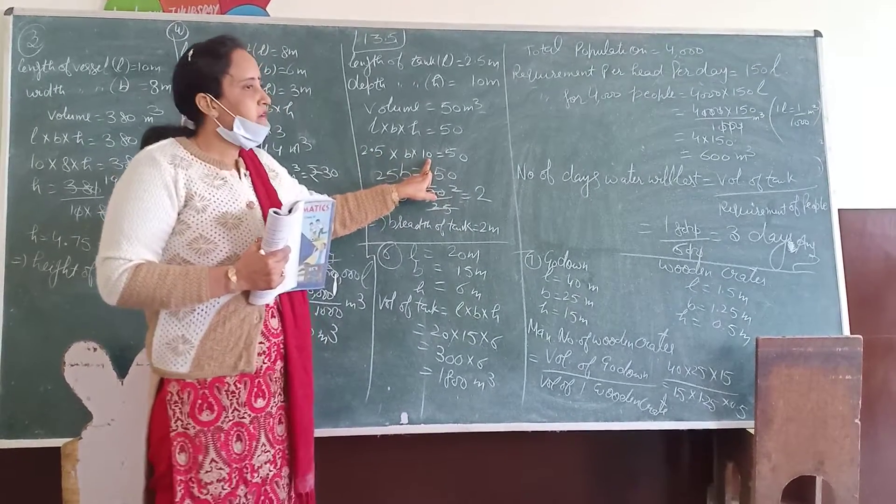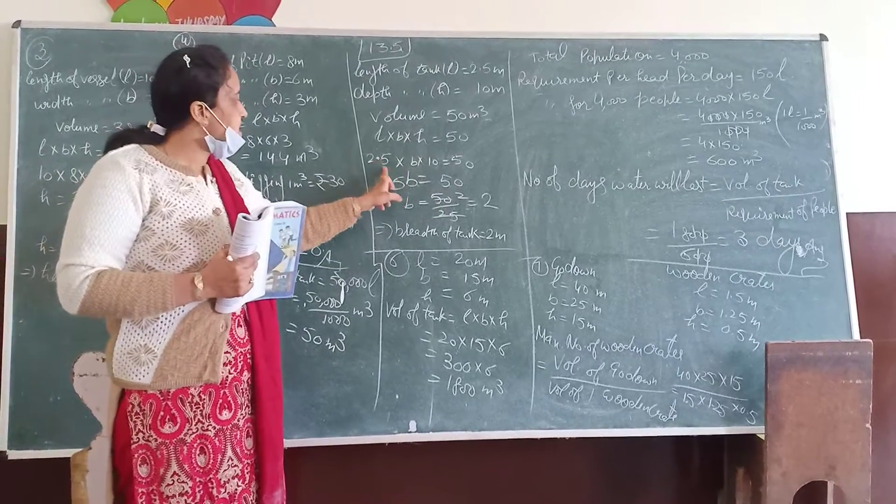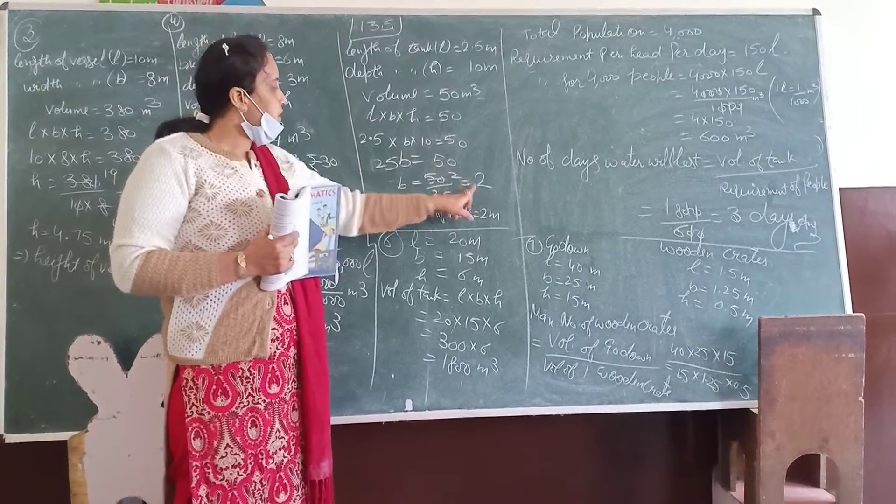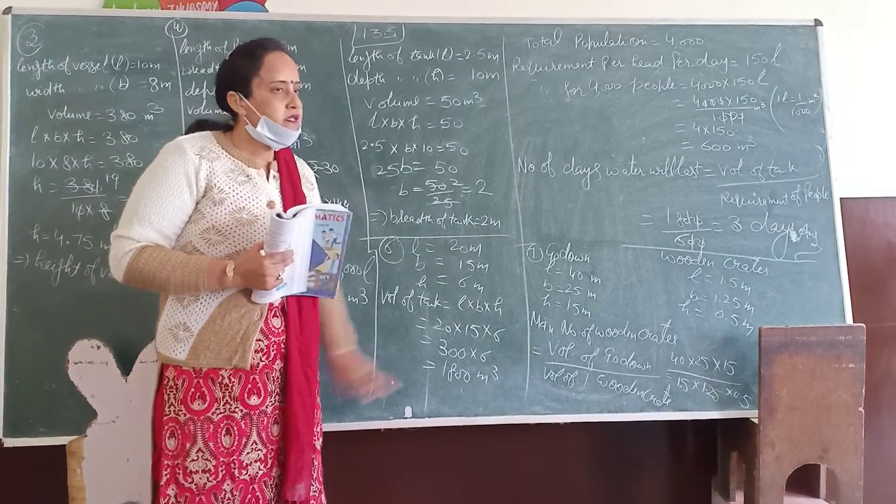2.5, which is 10. You get 50,000 meters. The breadth of the rectangular container is 2 meters.